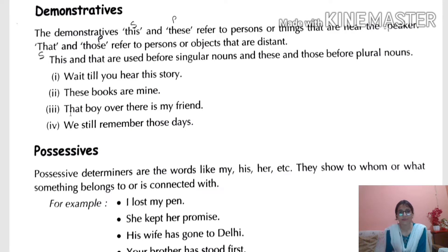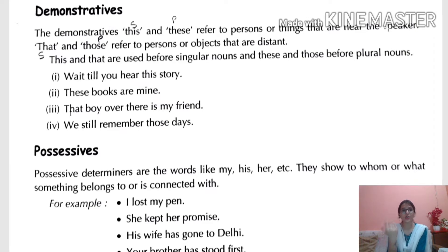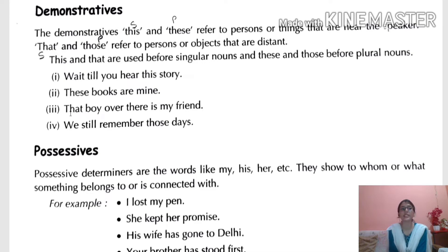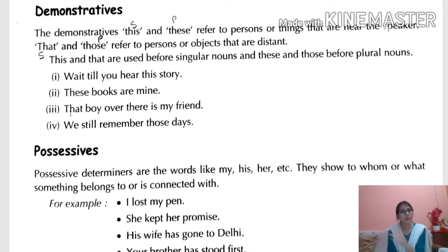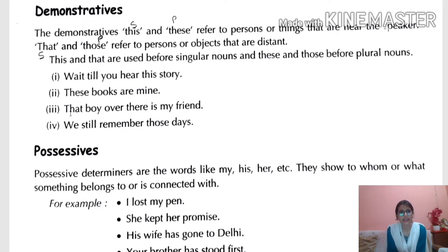'This' and 'these' refer to persons or things that are near the speaker — things that are nearby to us. We use 'this' or 'these' for things nearby, and 'that' and 'those' for things that are far away. 'This' and 'that' are used before singular nouns, and 'these' and 'those' before plural nouns.